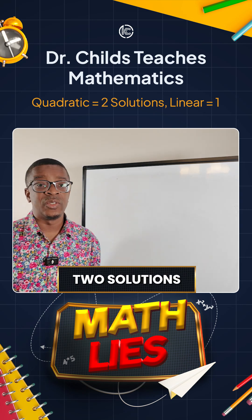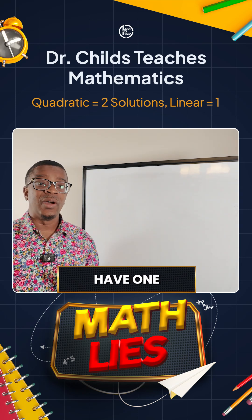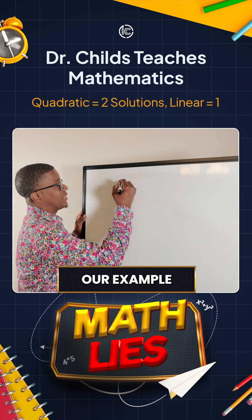This is a math block. Quadratics always have two solutions. Linear always have one. Did you know that it's false?